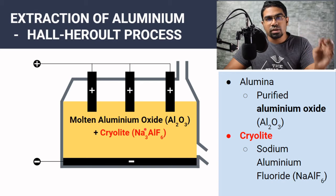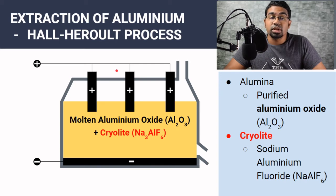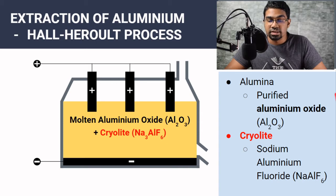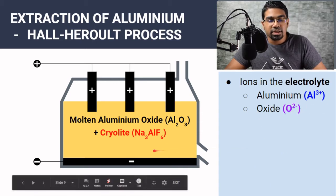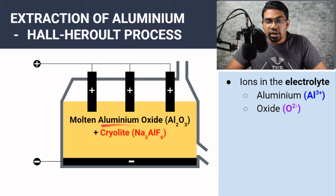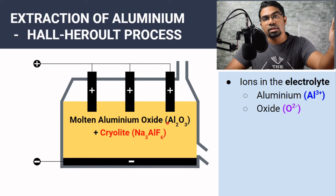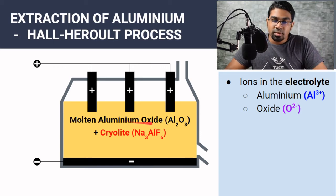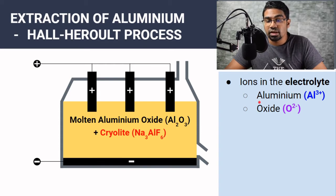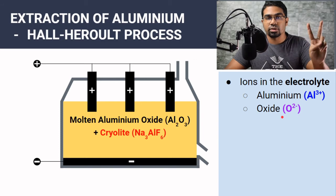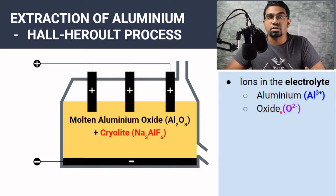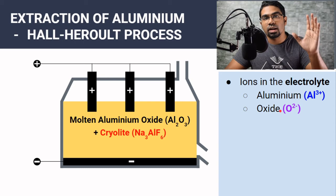Remember, solid form cannot conduct electricity. Electrolysis cannot be done on solid aluminium oxide — we need to melt it into the molten form before we can perform electrolysis. So the electrolyte here is actually just aluminium oxide. Cryolite is not part of the electrolytic process; its function is just to bring down the melting point. Since aluminium oxide is the only electrolyte, the ions present are just aluminium ions and oxide ions. There is no water because it is not an aqueous solution — it is a molten aluminium oxide.